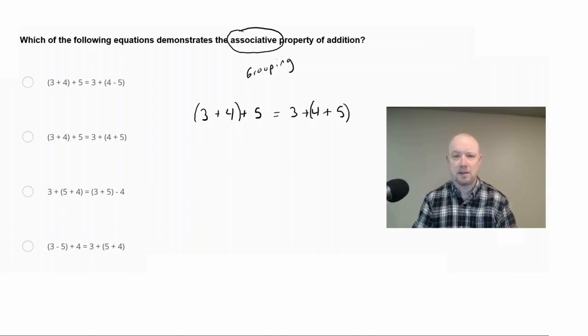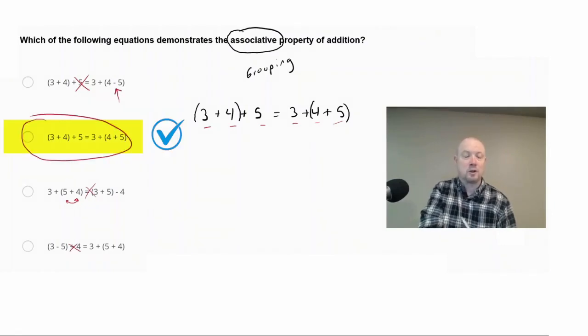So the associative property of addition says that it's going to remain equal. So if you look at some of these other choices on here, they wind up changing the sign. So in this one, there's a minus, so that answer is out. In this one, they change the order, so they flip around the four and the five. So with the associative property, the three, four, five order is going to remain the same. So this one's out. In this answer here, they have a minus sign, which changed it from addition. So the correct answer here would be this choice.